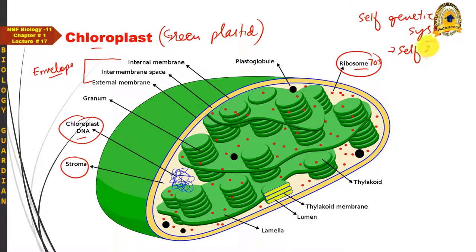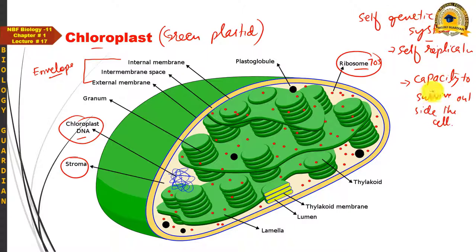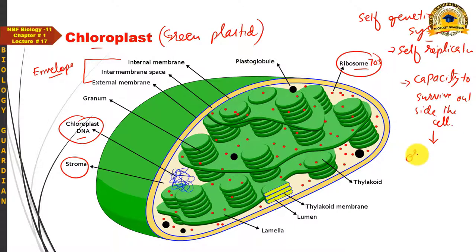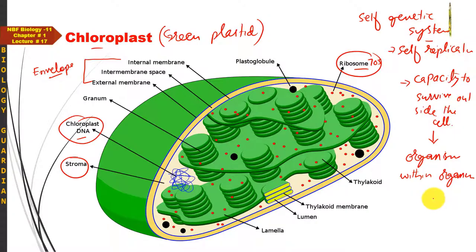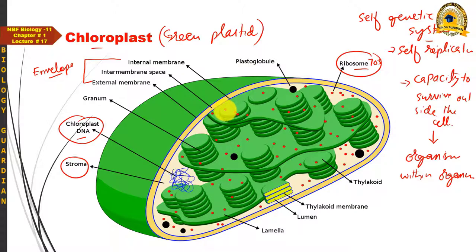Chloroplasts also show self-replicating property and the capacity to survive outside the cell in a suitable medium. Based on these three characteristics — self genetic system, self-replication, and survival outside the cell — chloroplasts are also assumed to be organisms within organisms, showing endosymbiotic origin, just like mitochondria.